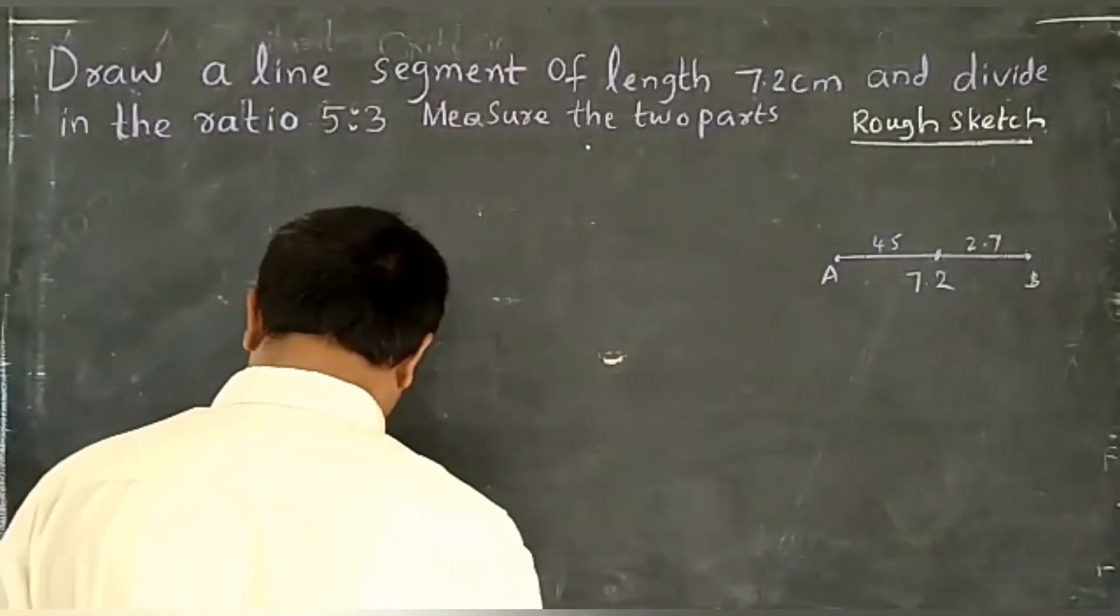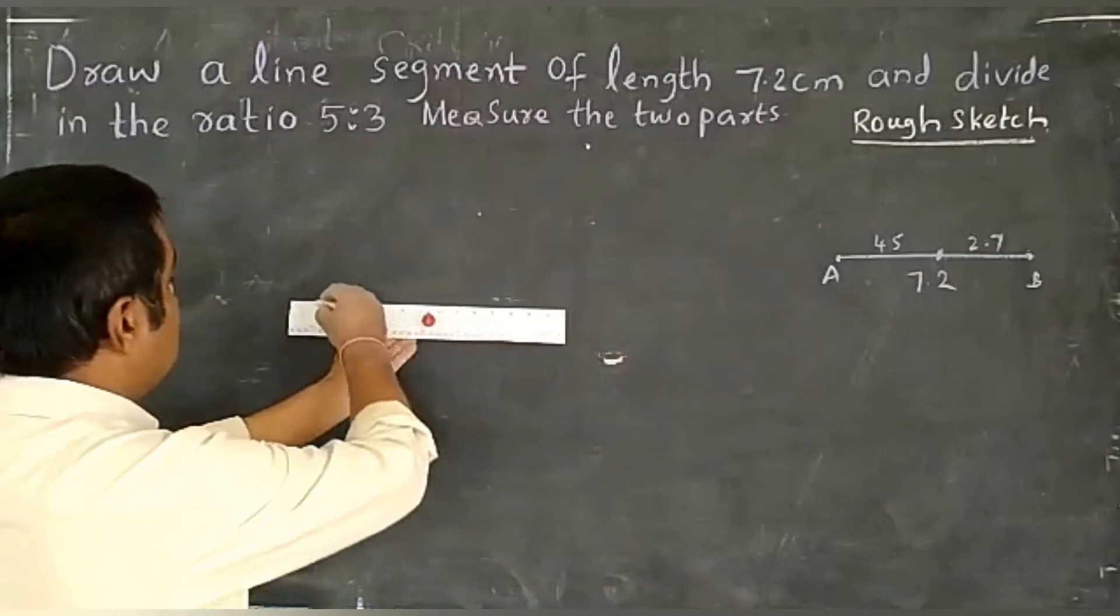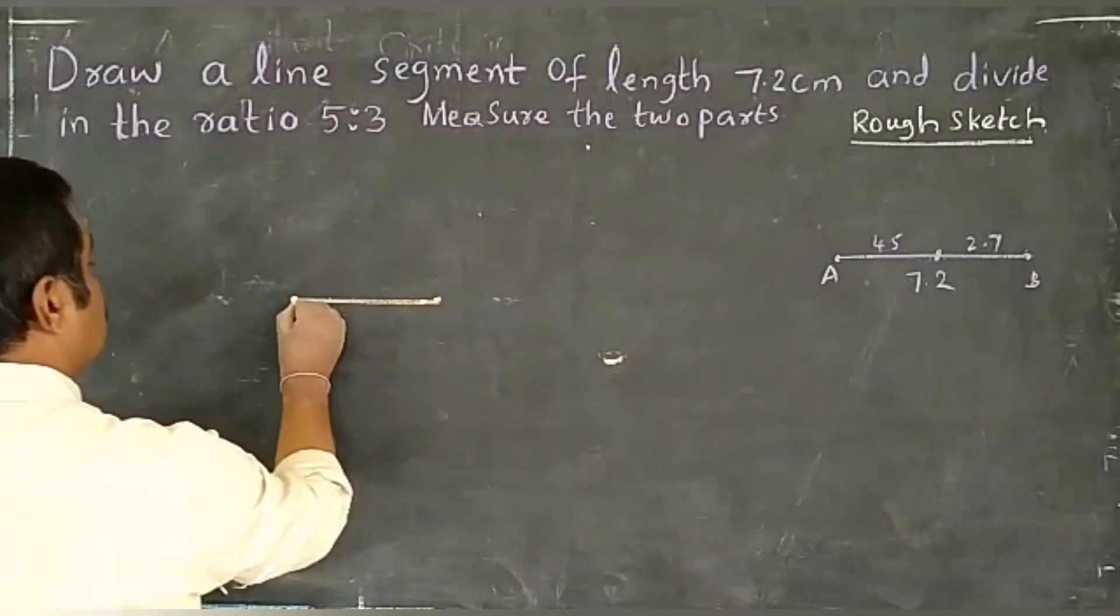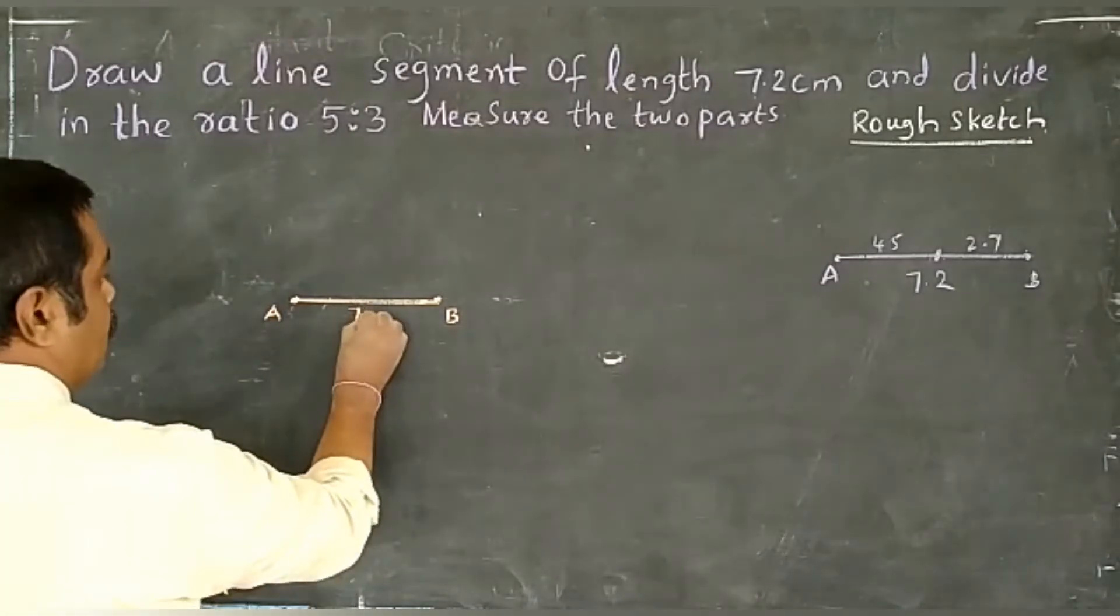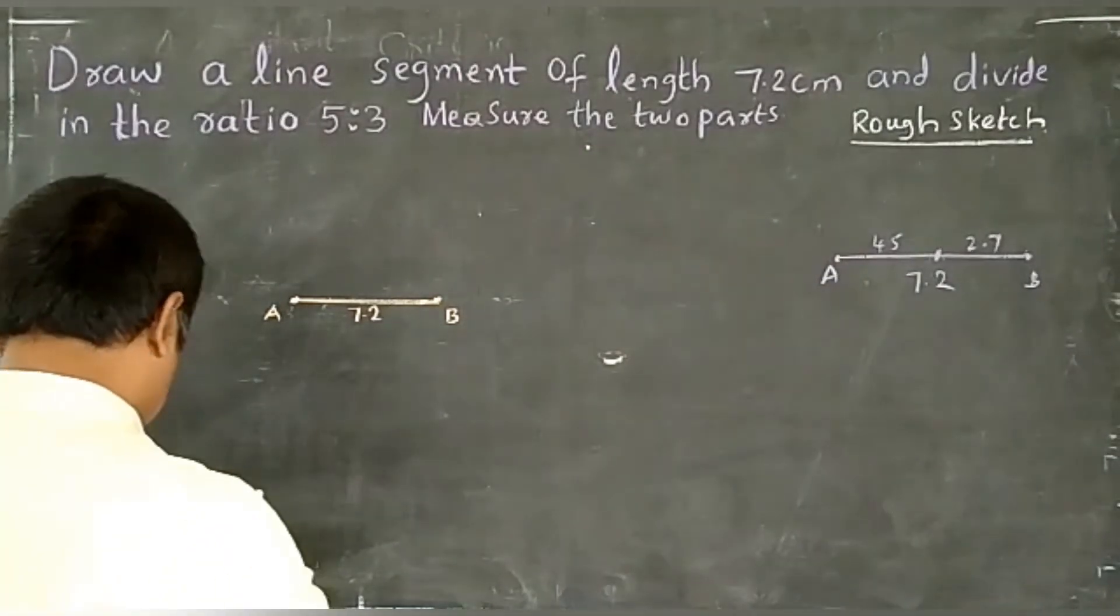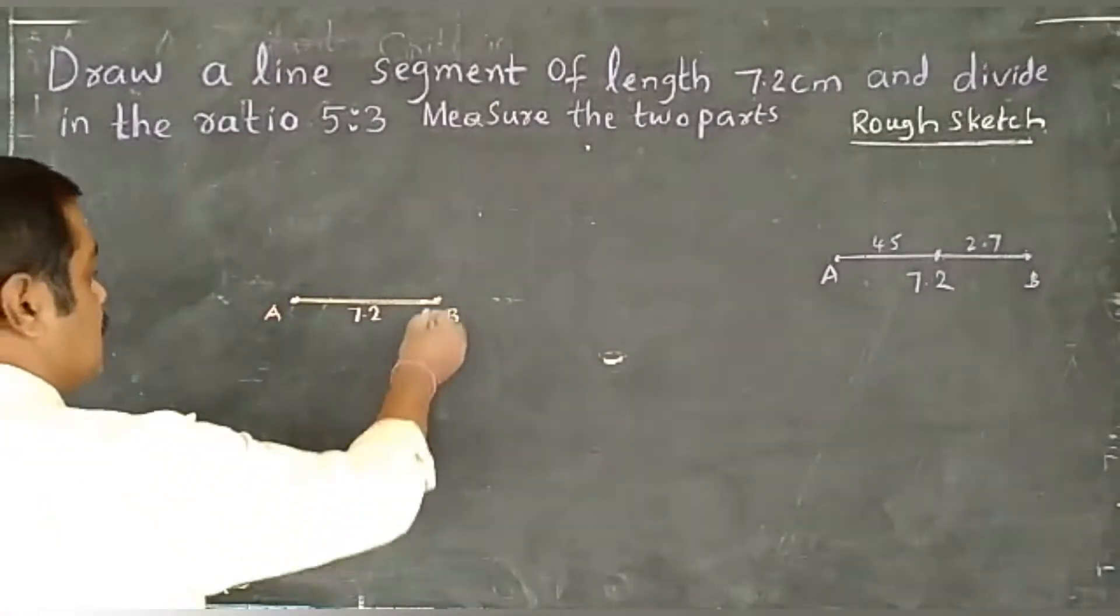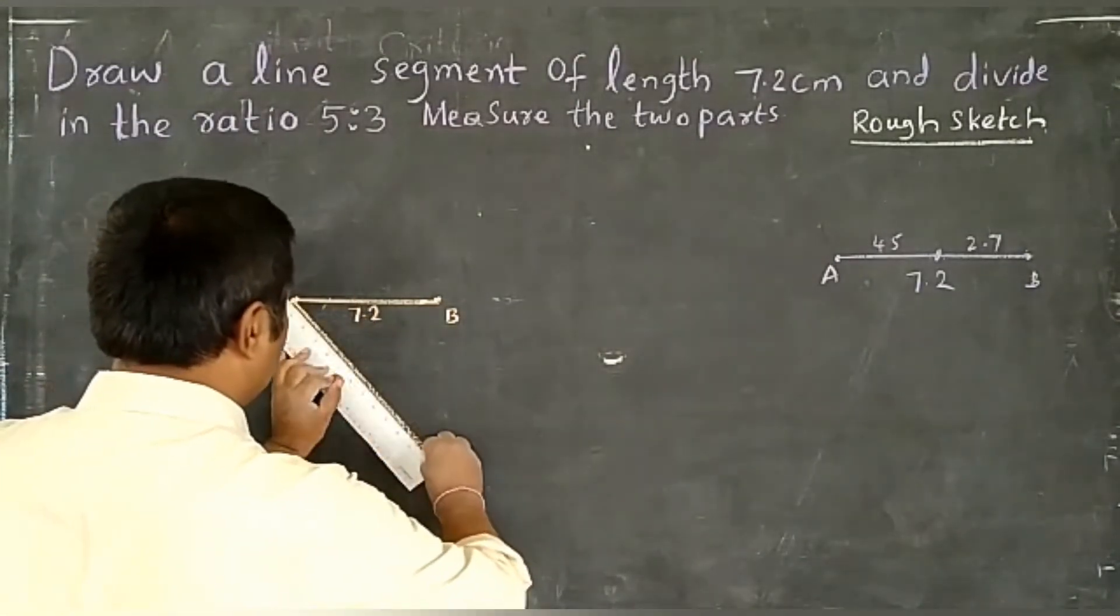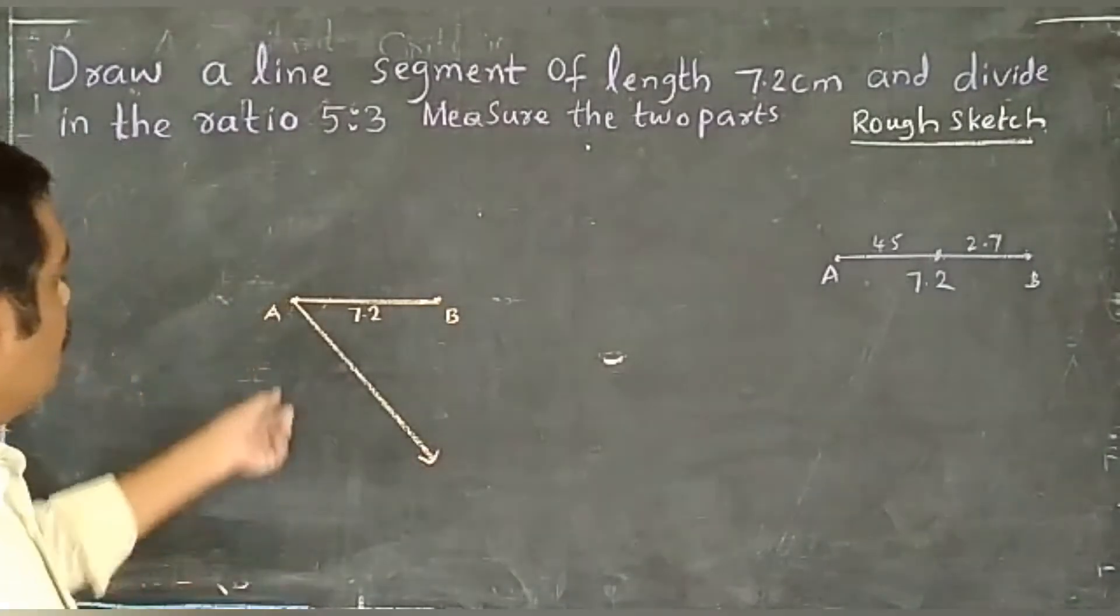Take the help of Basic Proportionality Theorem to do this problem. First, draw a line segment AB equal to 7.2 centimeters. This is AB, 7.2 centimeters. Next, draw a ray AX where angle BAX is an acute angle.